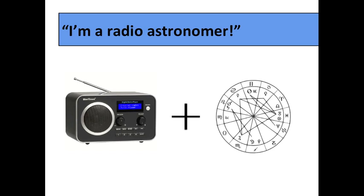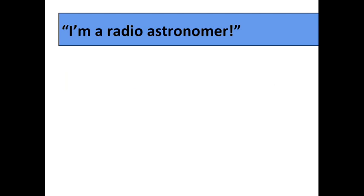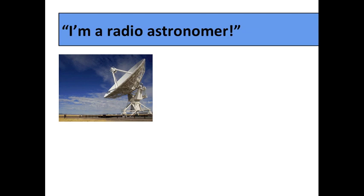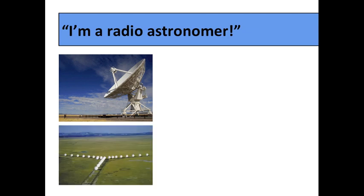This is not, in fact, what radio astronomers do. Radio astronomers use telescopes like this, or arrays of radio telescopes like this. They point it at the sky, and they collect light, which is in a very specific part of the electromagnetic spectrum.